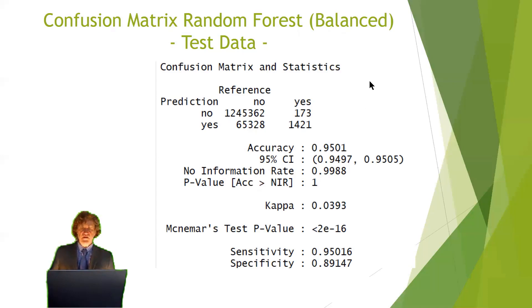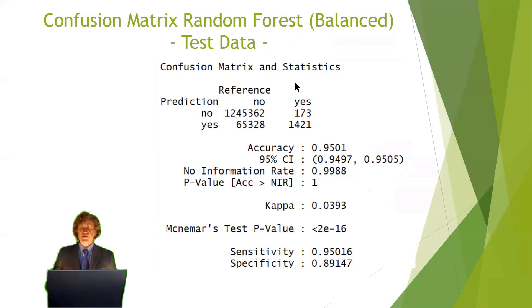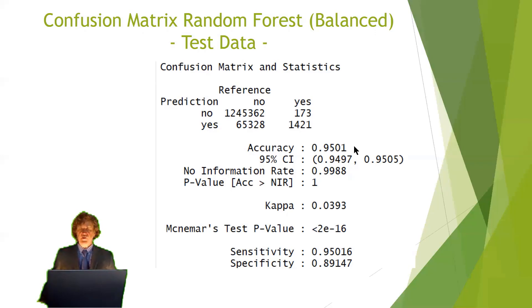Here are the predictions of our random forest based on the test data. From cells that were not developed in 2001 and not developed in 2016, most — but not all — are predicted correctly as 'no.' The major improvement is that the 'yes' cells that became urban are now mostly predicted correctly as 'yes,' with only a small fraction incorrectly predicted as 'no.' Our accuracy is no longer as high, but 95% is still a very good result.